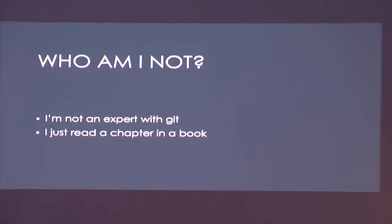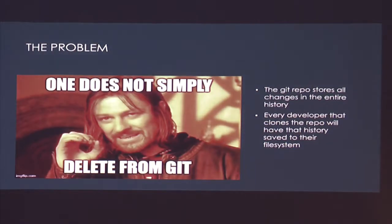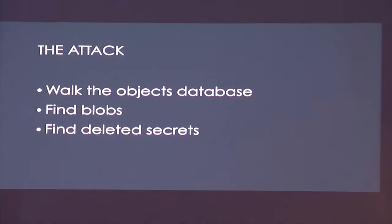So what I'm not — I'm not a Git expert. Don't ask me about rebasing. I don't know what it is. What happens when someone commits a secret into a Git repository and didn't know that was a really bad idea? Because in the Git repo, all history of all changes are going to be in there on everyone's file system once they do a Git pull or a Git fetch, even if it's not on the branch they're on. So what we're going to do is walk objects in the Git database, find what are called blobs, and then find things that people thought were deleted.